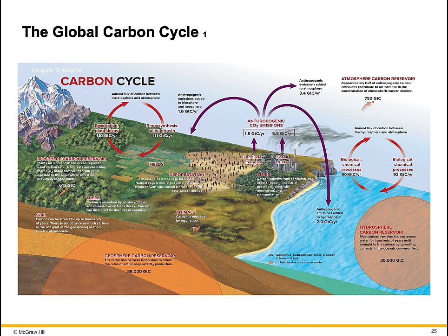Anthropogenic CO2 emissions come from land use changes, fossil fuels, and cities. Carbon sources from consumption of fossil fuels include industrial processes, electricity generation, and transportation. Approximately half of the anthropogenic carbon emissions contribute to an increase in the concentration of atmospheric carbon dioxide. There is an annual flux of carbon between the hydrosphere and the atmosphere. Most carbon remains in deep ocean water for hundreds of years until brought to the surface by upwelling currents in the oceanic conveyor belt.